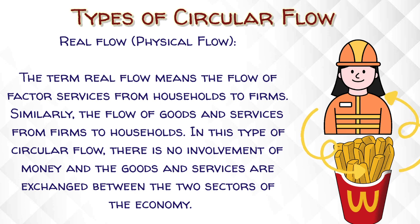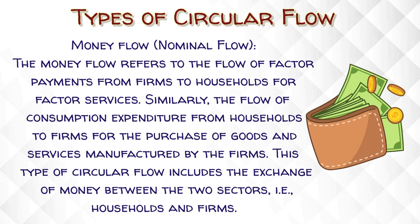In real flow, there is no involvement of money — goods and services are exchanged between the two sectors of the economy. The money flow reflects the flow of factor payments from firms to households for factor services, and similarly the flow of consumption expenditure from households to firms for the purchase of goods and services manufactured by the firms. This type of circular flow includes the exchange of money between the two sectors, that is household and firms.